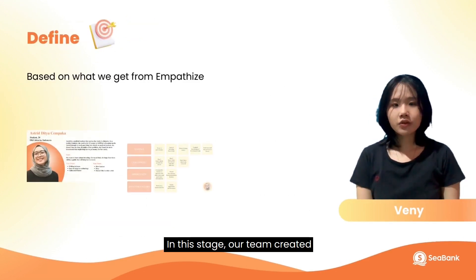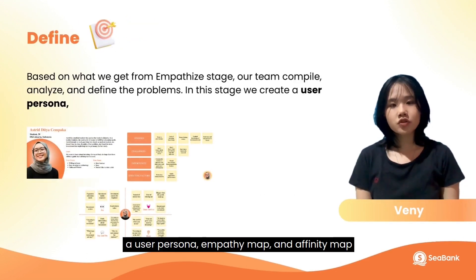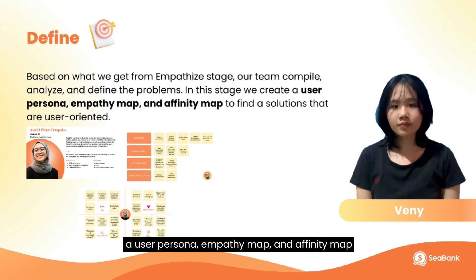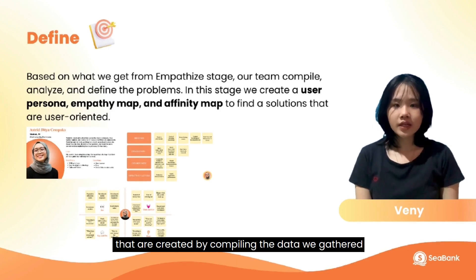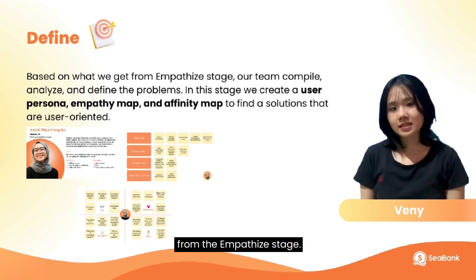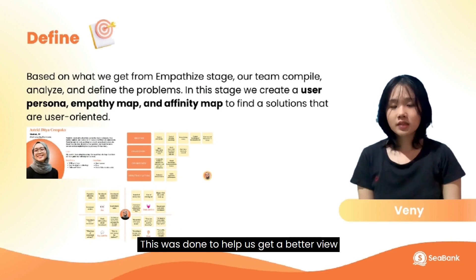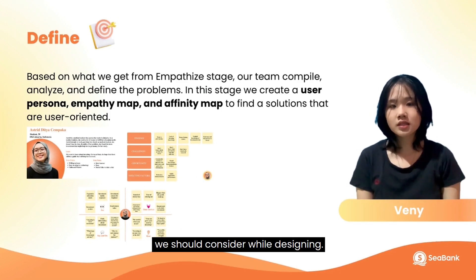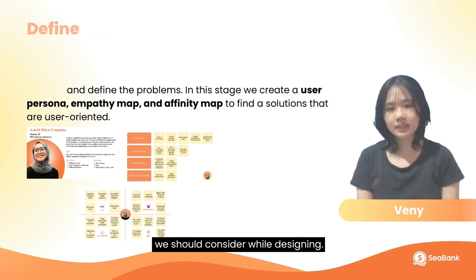In the define stage, our team created a user persona, empathy map, and affinity map, compiled from the data gathered in the empathize stage. This was done to help us get a better view of the core problems and factors we should consider while designing.